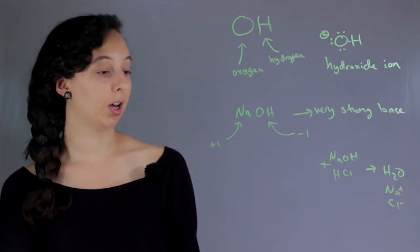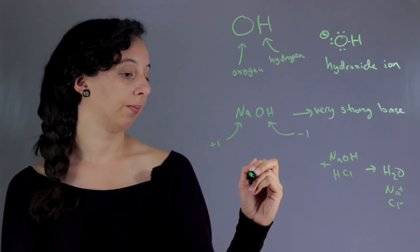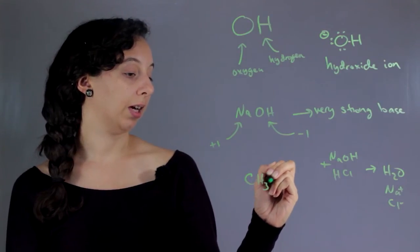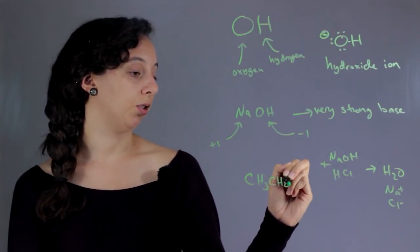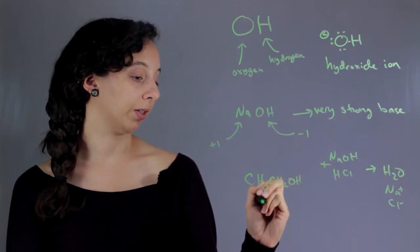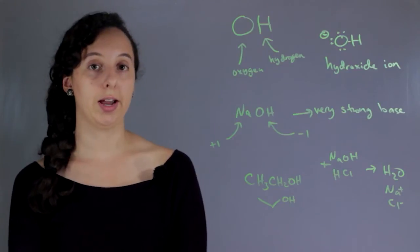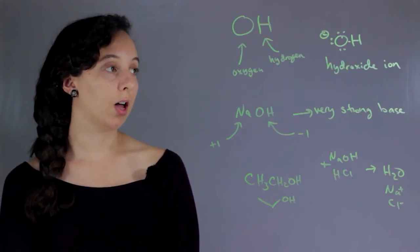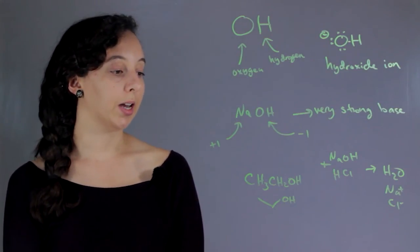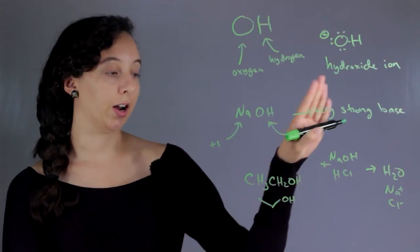...always be in an acid or base. You could have CH3CH2OH, which has the OH group, but we wouldn't call this a hydroxide because it is not an ionic bond.